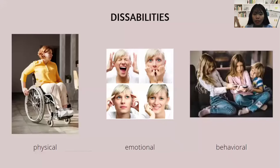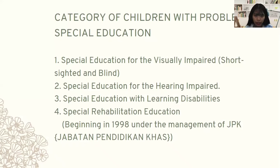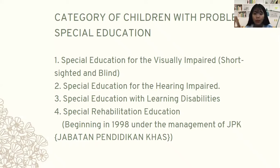There are three types of disabilities: physical, emotional, and behavioral. These are the categories of children with problems in special education. The first one is special education for the visually impaired, short-sighted, and blind. The second one is special education for the hearing impaired. The third one is special education with learning disabilities. And the last one is special education, which begins in 1998 under the management of JPK, Jabatan Pendidikan Khas.